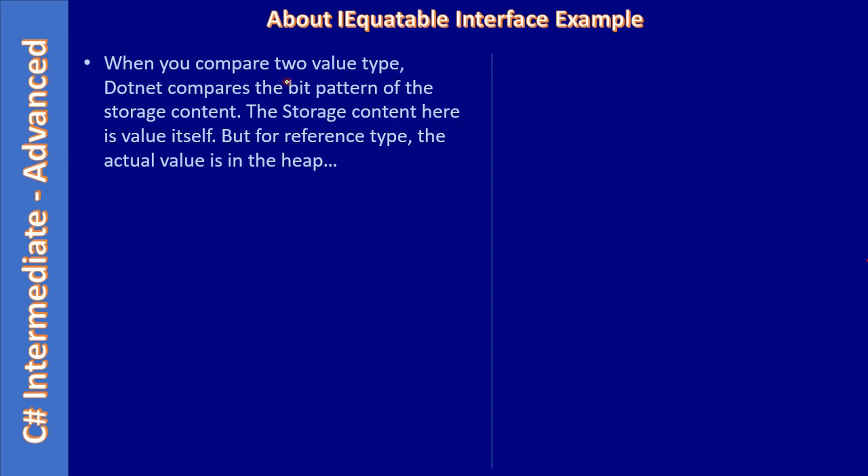When you compare two value types, .NET compares the bit pattern of the storage content. The storage content here is the value itself. But for reference type, the story is different. We already saw that in the previous video when we implemented the IComparable interface.